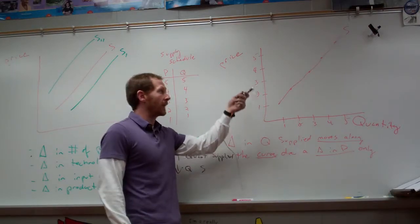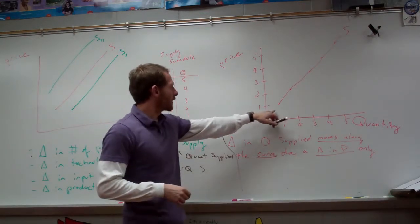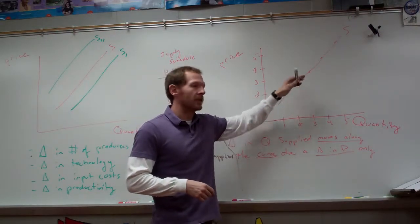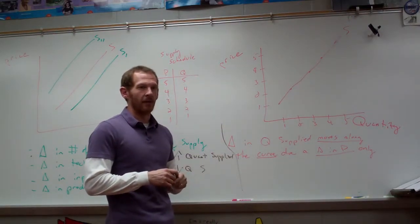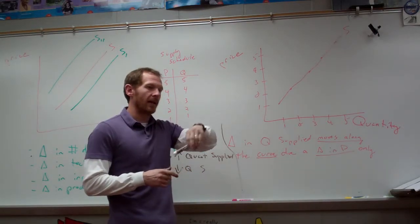You can see on the x-axis again is quantity, and on the y-axis is price. And you just plot the points: $1, $1; $2, $2. And you can see it's upward sloping. So it has an increasing slope of supply, and demand has a decreasing slope, it's downward sloping.